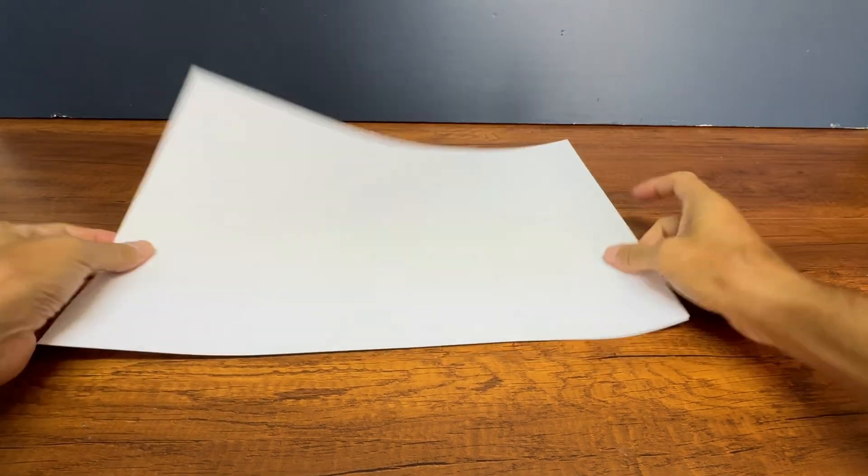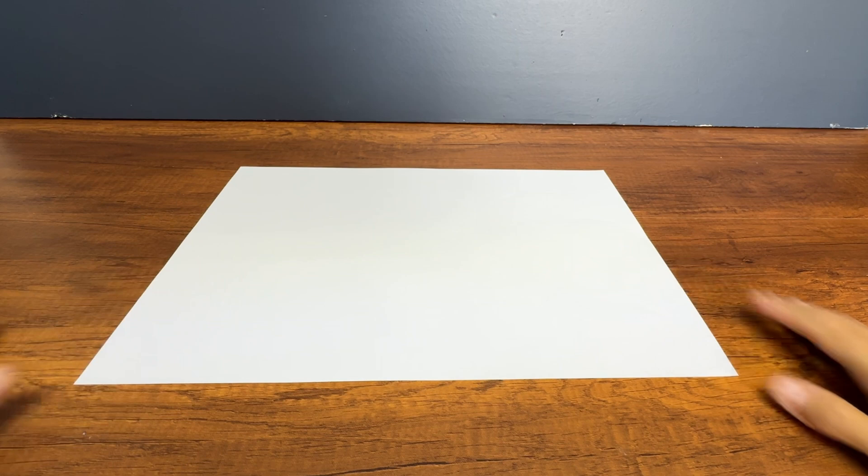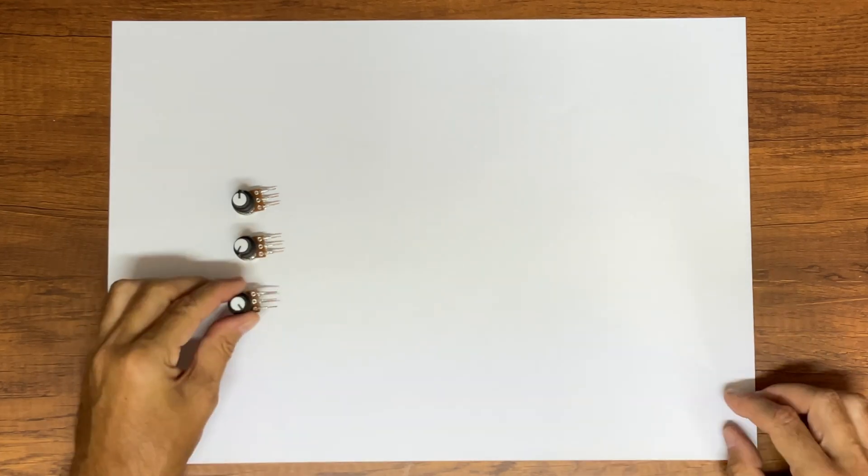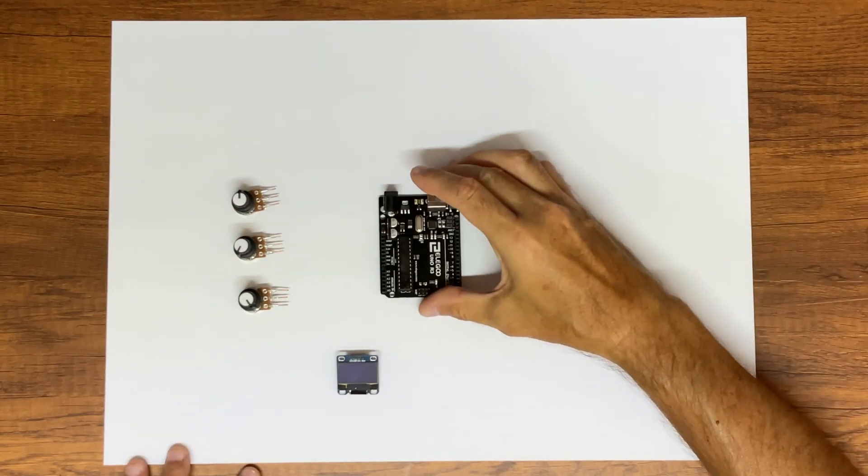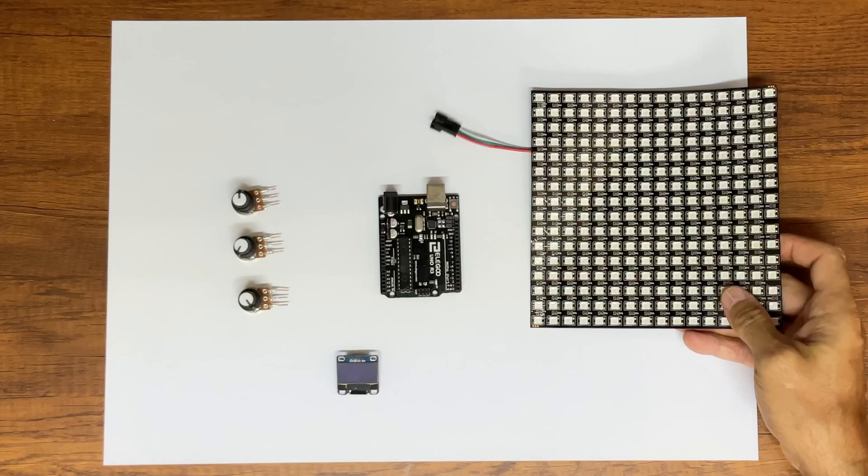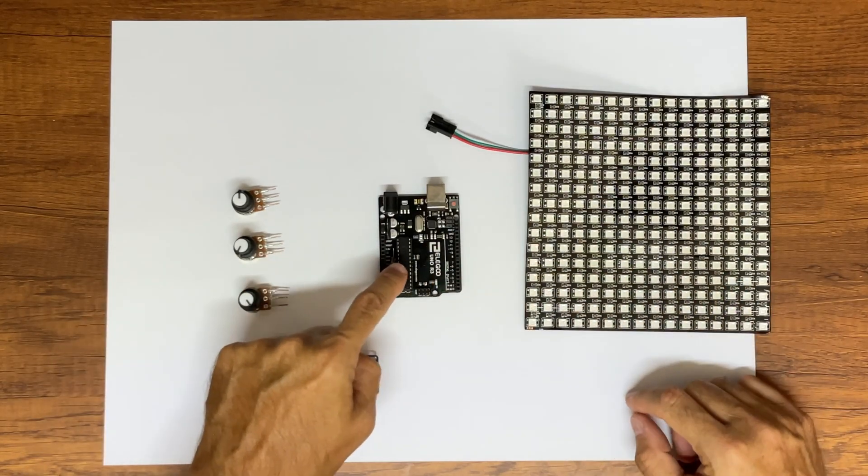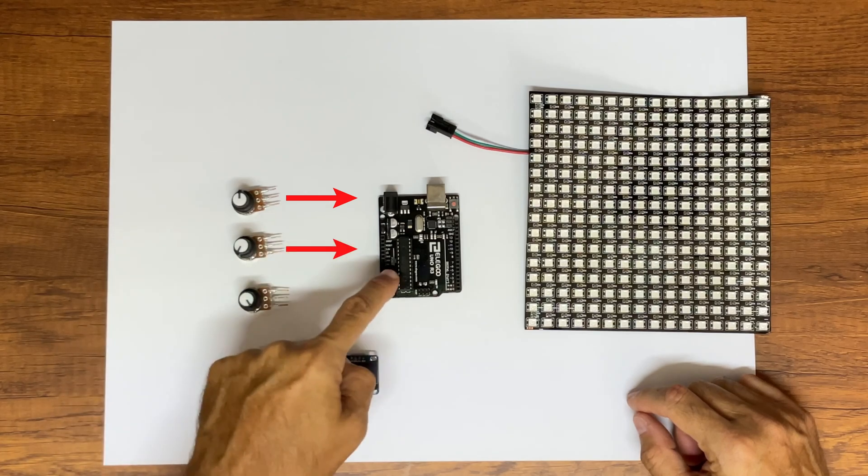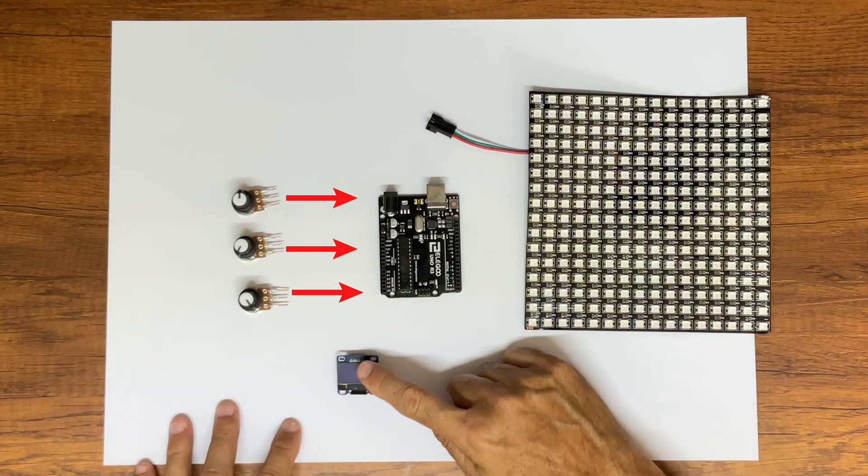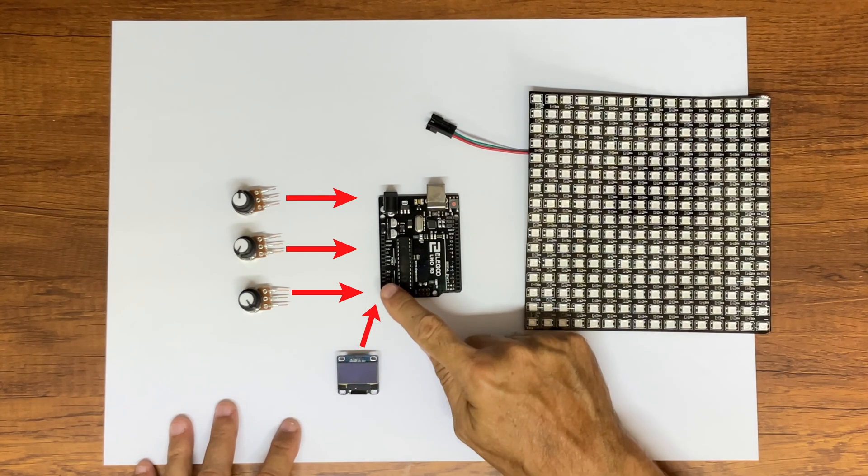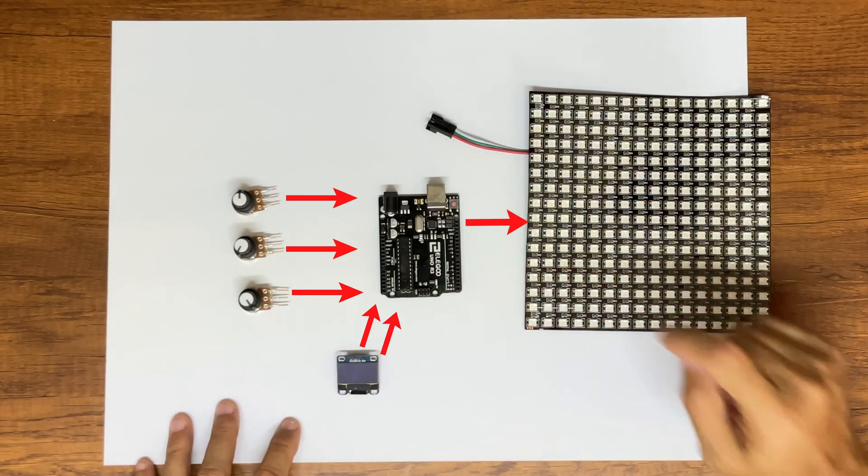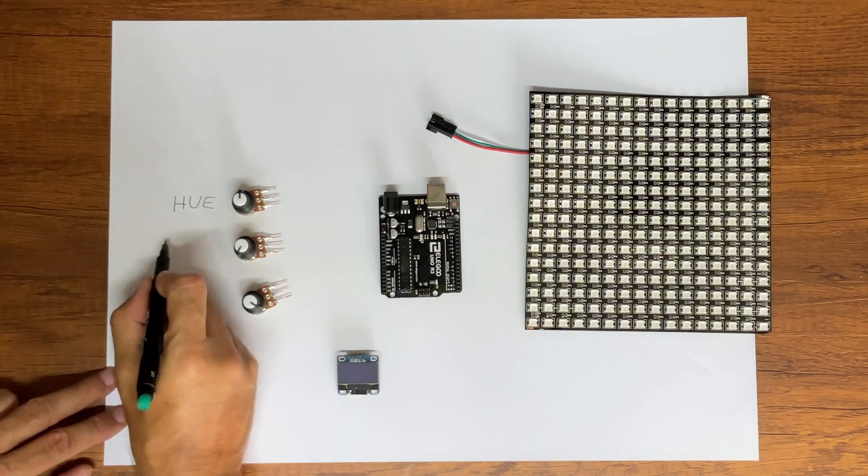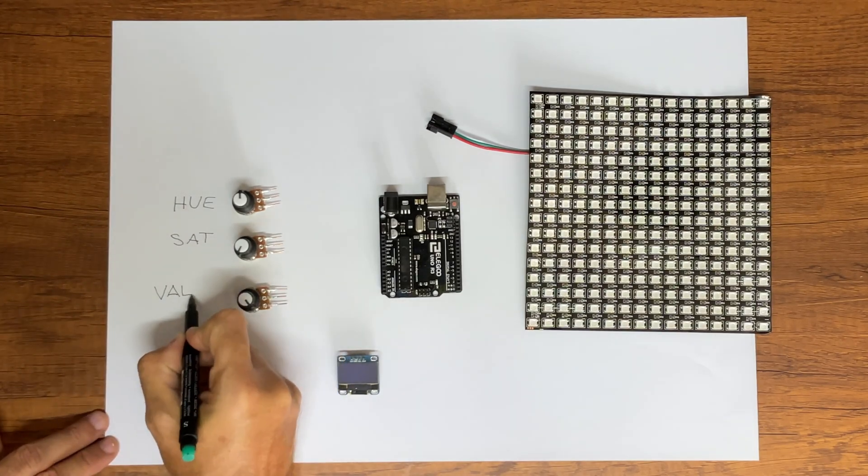Now let's see how to draw the electrical diagram of the circuit that will make you understand in practice how the HSV color system works. We use three potentiometers and an SSD 1306 OLED display, an Arduino, and some RGB LEDs. We need to connect the potentiometers to the analog input of Arduino, connect the SDA and SCK pins to the analog input of Arduino, and finally connect the digital output to the RGB LEDs. The three potentiometers will be used to set the value of Hue, Saturation, and Value.